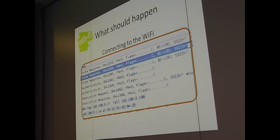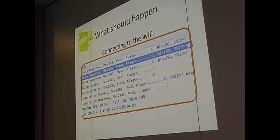What should happen? You connect to the Wi-Fi. Wi-Fi works with probes and probe responses. You see an SSID, the SSID sends out probes, you respond to a probe, you enter the authentication step — which is basically a very old step from the time of WEP — you associate with the access point, and you have a wireless connection.